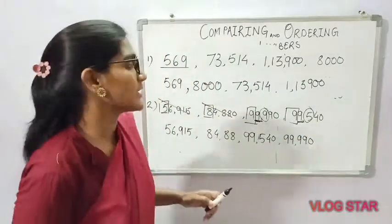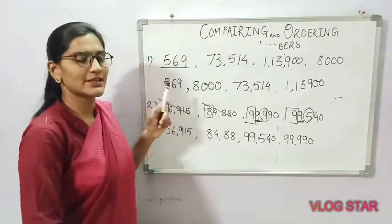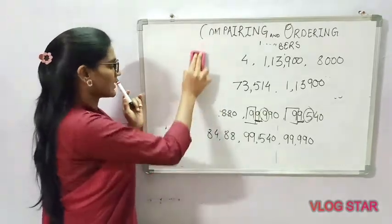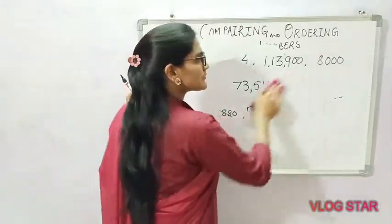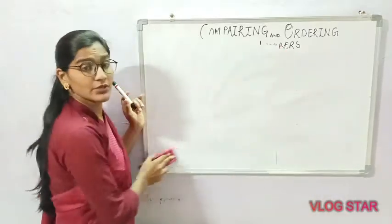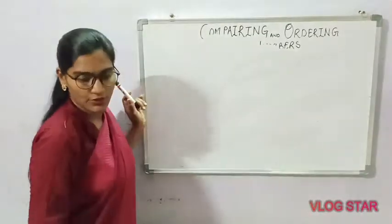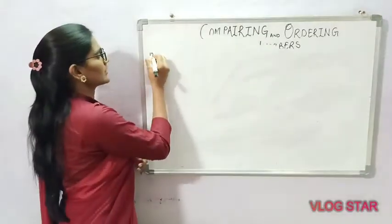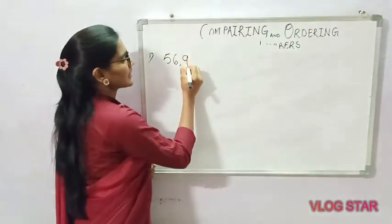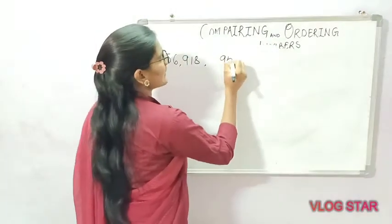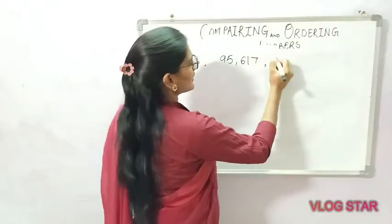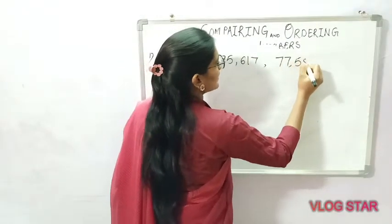So that is all about ascending order. Now we will take the next example and write numbers in descending order. We will use five-digit numbers again. The numbers are: 56,918, 95,617, and 77,580.